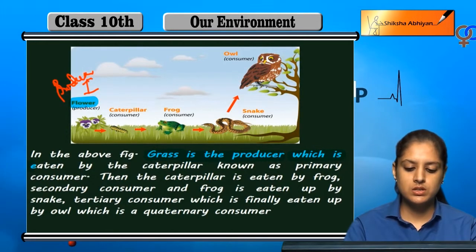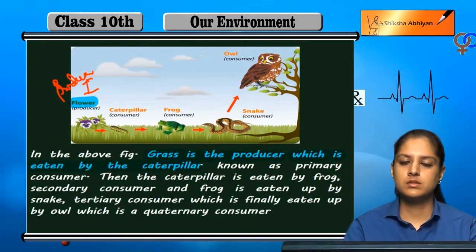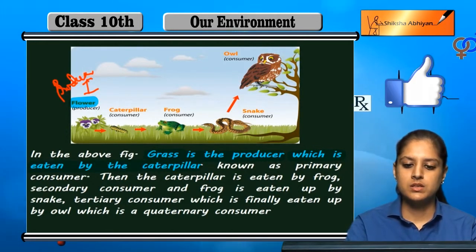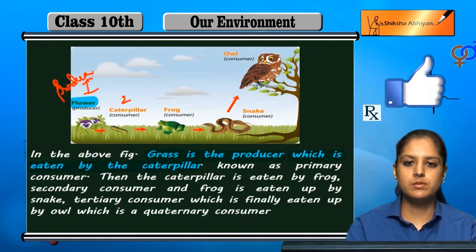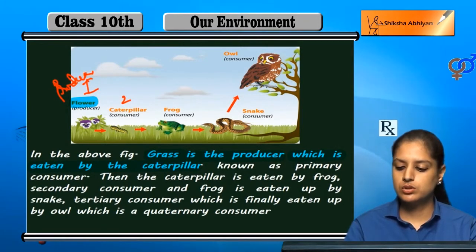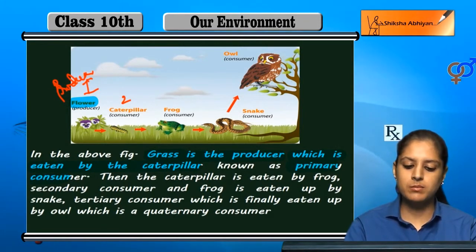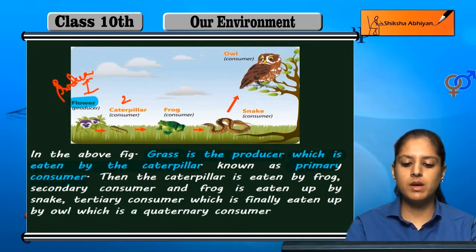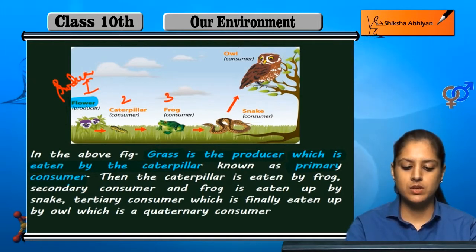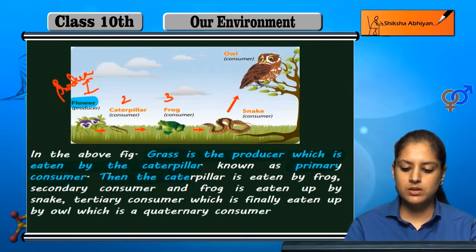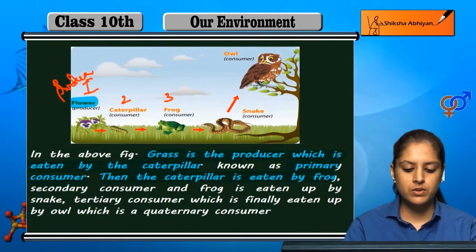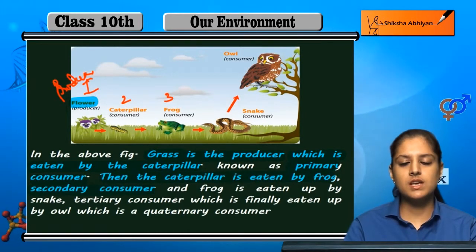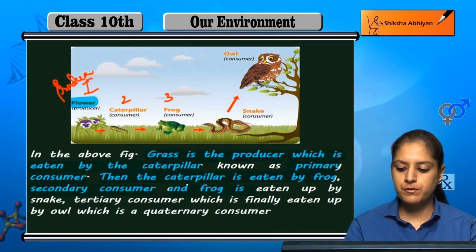The grass is eaten by the caterpillar, so this is the second level — the caterpillar is the primary consumer. Then the caterpillar is eaten by a frog, so the frog is called the secondary consumer.